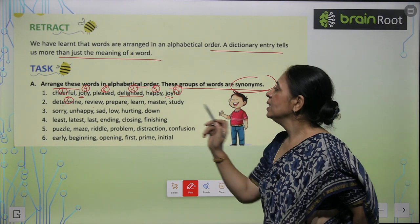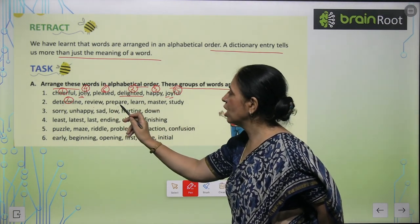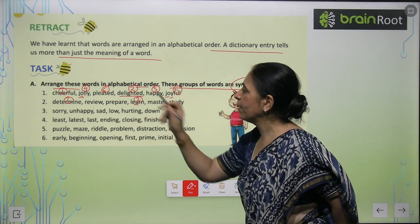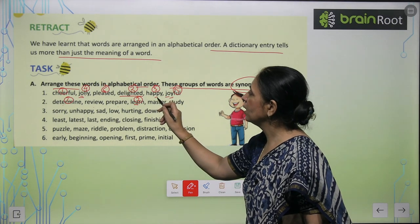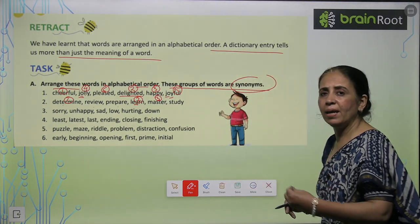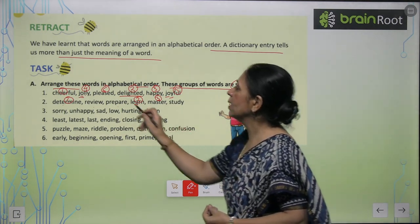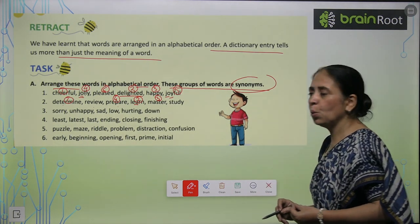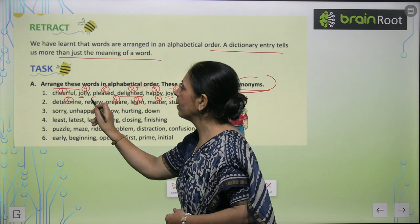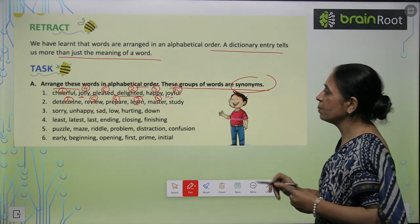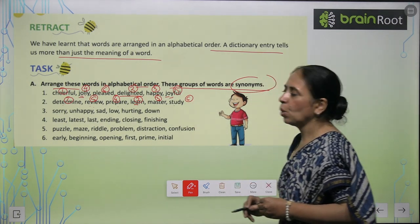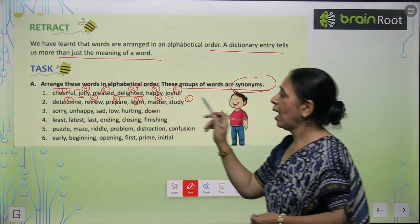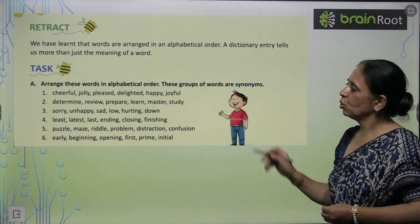After D, there's no word for E, F, G, H, I, J, K. Then L is here — so Learn will be the second number. After L comes M, and we write Master here at number three. Then N — no word. P is there: Prepare at fourth number. Q, then R is there: that means Review at fifth number. And then last, that is sixth number — Study. So the order is: Determine, Learn, Master, Prepare, Review, and Study. The remaining parts you can try yourself — it will be a very interesting activity.